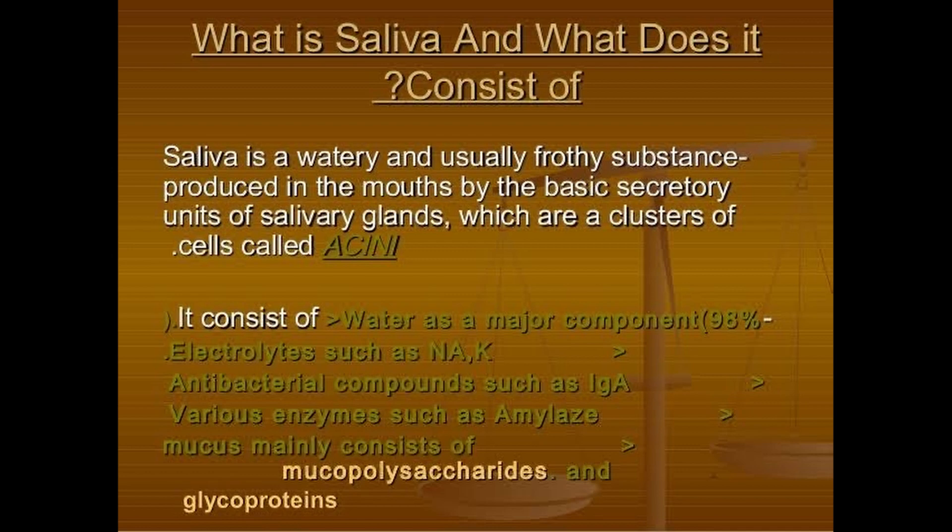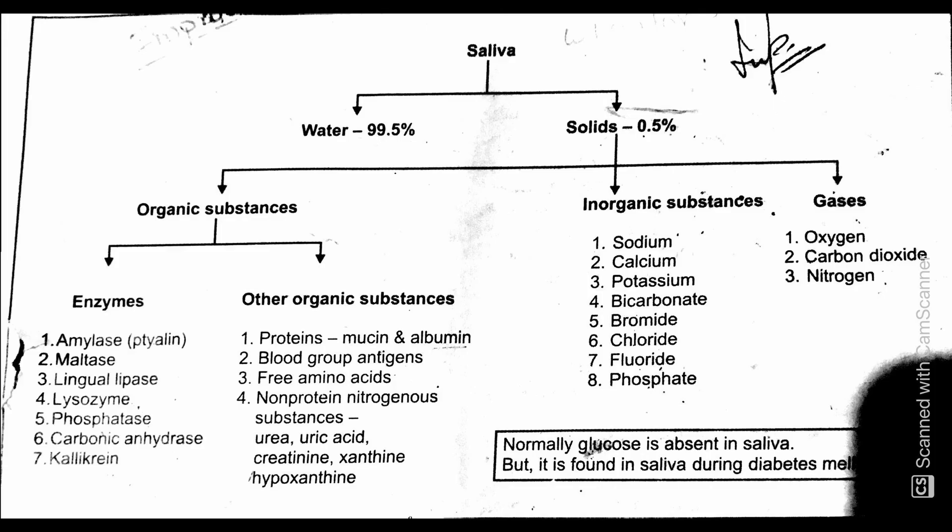Saliva consists of water and solid substances. Water is 99.5% and the solid is 0.5%. In the solid there are organic substances, inorganic substances, and gases. In the organic substances there are two categories: enzymes and other organic substances. The enzymes present in saliva include amylase, maltase, lingual lipase, lysozyme, phosphatase, carbonic anhydrase, and kallikrein.